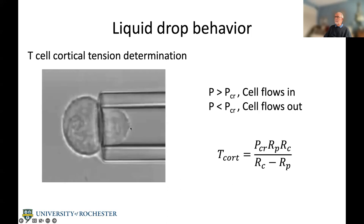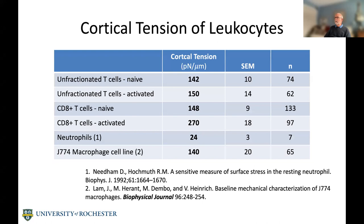We identify the pressure at which the cell neither withdraws from the pipette nor moves further into it — we call that the critical pressure. We can calculate T-cortical from this relationship, which comes from the law of Laplace. One of the things we were interested in is how cortical tension differs between different types of leukocytes and what happens when a leukocyte becomes activated.